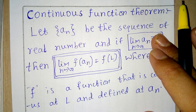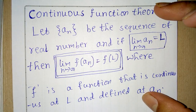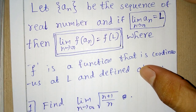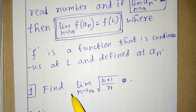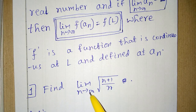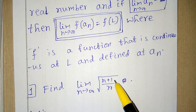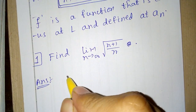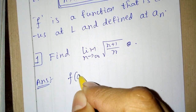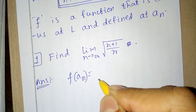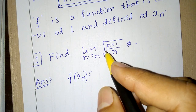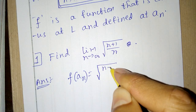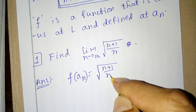Using this Continuous Function Theorem, we can solve some problems. The first problem given is: find the limit as n tends to infinity of the square root of (n plus 1) divided by n. We can take f(An) equal to the square root of (n plus 1) divided by n.